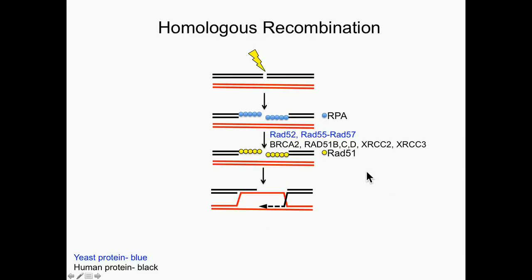In budding yeast, RAD51 filament formation is promoted by the RAD51 mediators. These include RAD52, which you heard about from Rodney, and the RAD51 paralogs RAD55 and RAD57 — proteins that bear structural resemblance to RAD51. In humans, BRCA2 forms an analogous function to RAD52, and the RAD51 paralogs include RAD51B, CD, XRCC2, and 3.